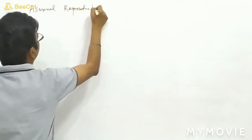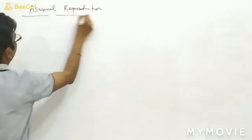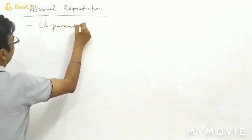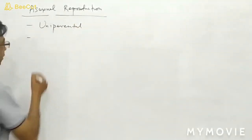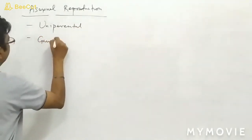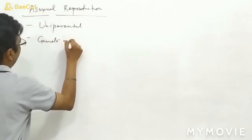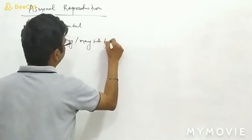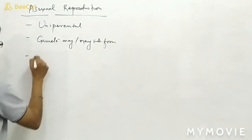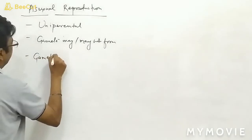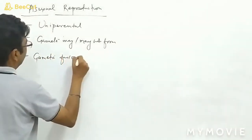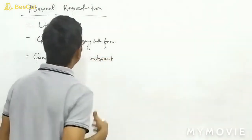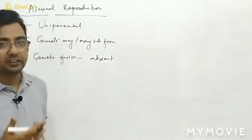We can call it as uniparental. Gamete may or may not form, and gametic fusion is absent. This is when we talk about asexual reproduction in general.